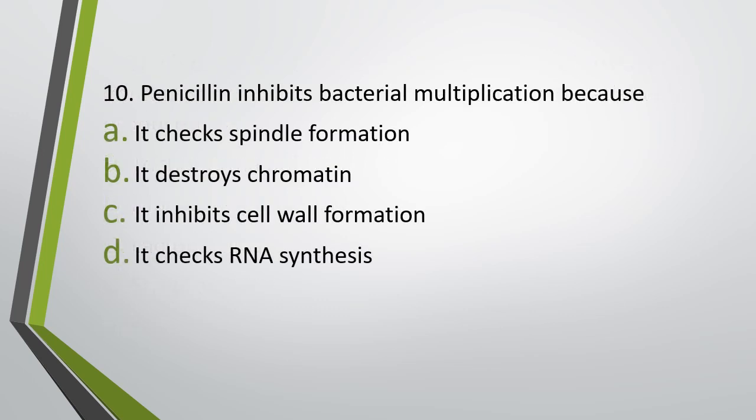Question number ten: Penicillin inhibits bacterial multiplication because — (a) it checks spindle formation, (b) it destroys chromatin, (c) it inhibits cell wall formation, (d) it checks RNA synthesis. Correct answer is option C: it inhibits cell wall formation.